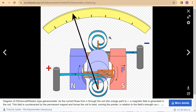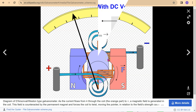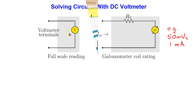Digital multimeters are widely used today and have made analog multimeters based on the galvanometer virtually obsolete. Nevertheless, in first year engineering, digital multimeters are treated as outside the scope. Instead, first year textbooks consider analog voltmeters and analog ammeters. The block diagram of an analog voltmeter is shown here — it consists of a galvanometer coil in series with a resistor Rv.